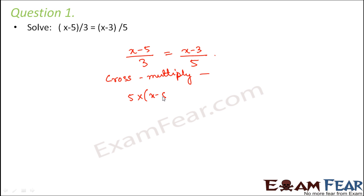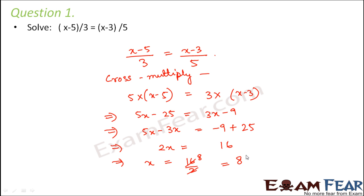We get 5 into (x-5) is equal to 3 into (x-3). So this becomes 5x - 25 = 3x - 9, or we can say 5x - 3x = -9 + 25, or 2x = 16, or x = 16/2. So this is equal to 8. So x = 8 is the solution for this equation.